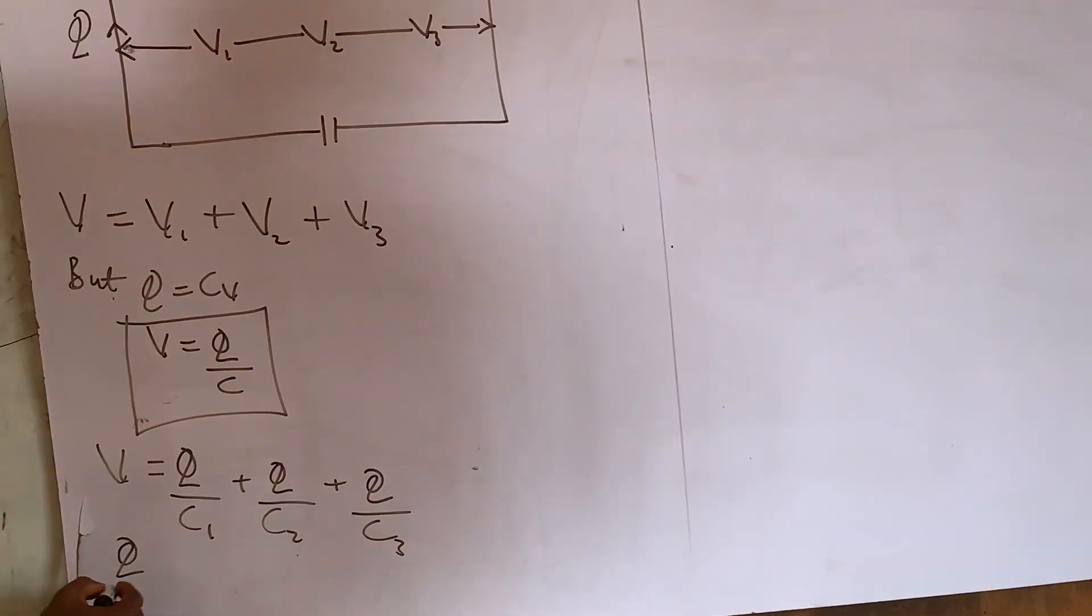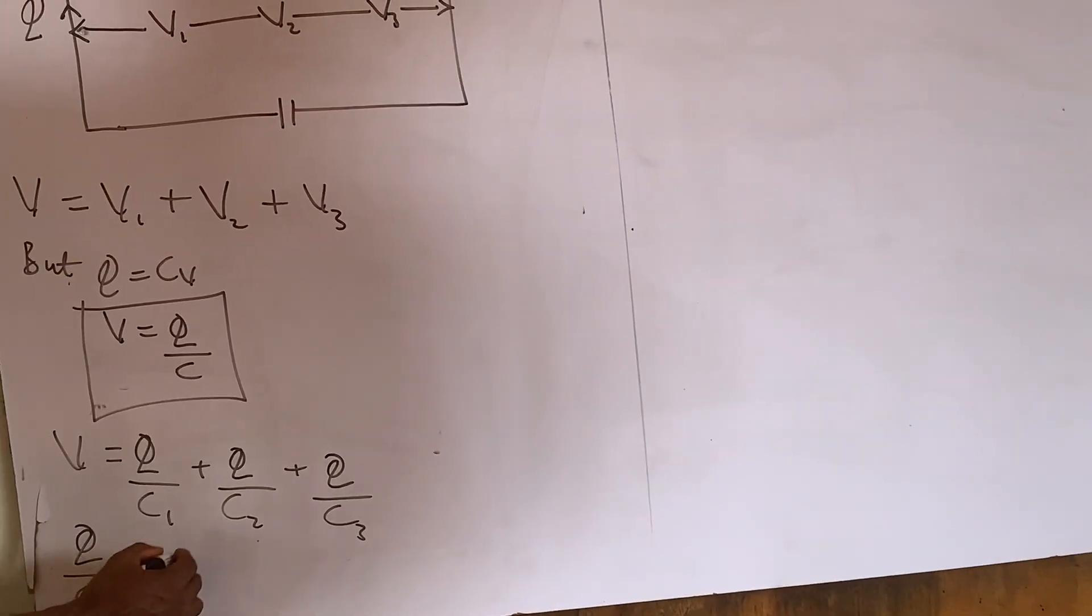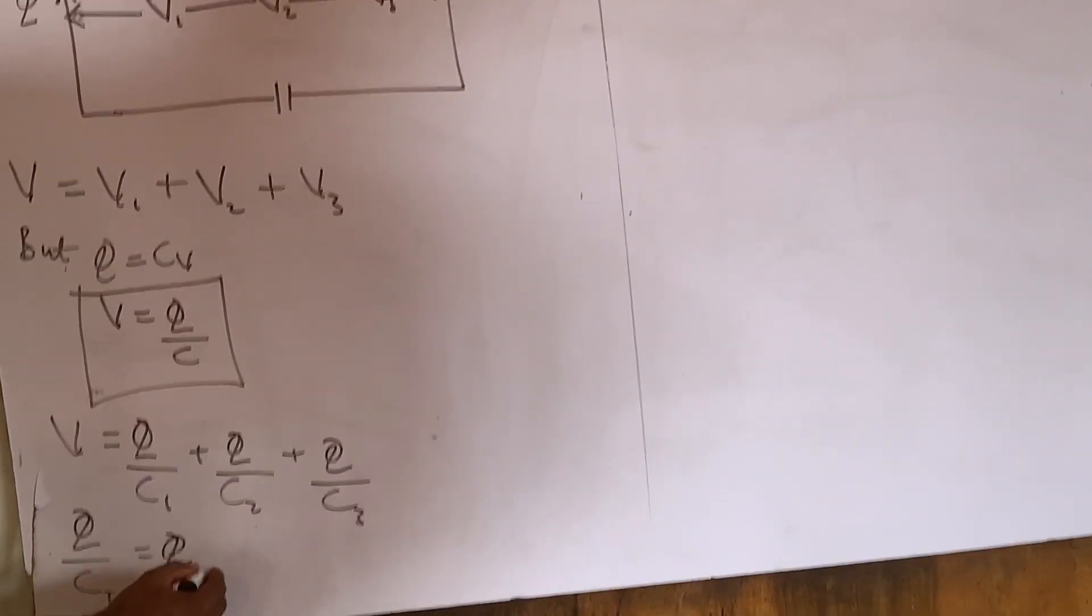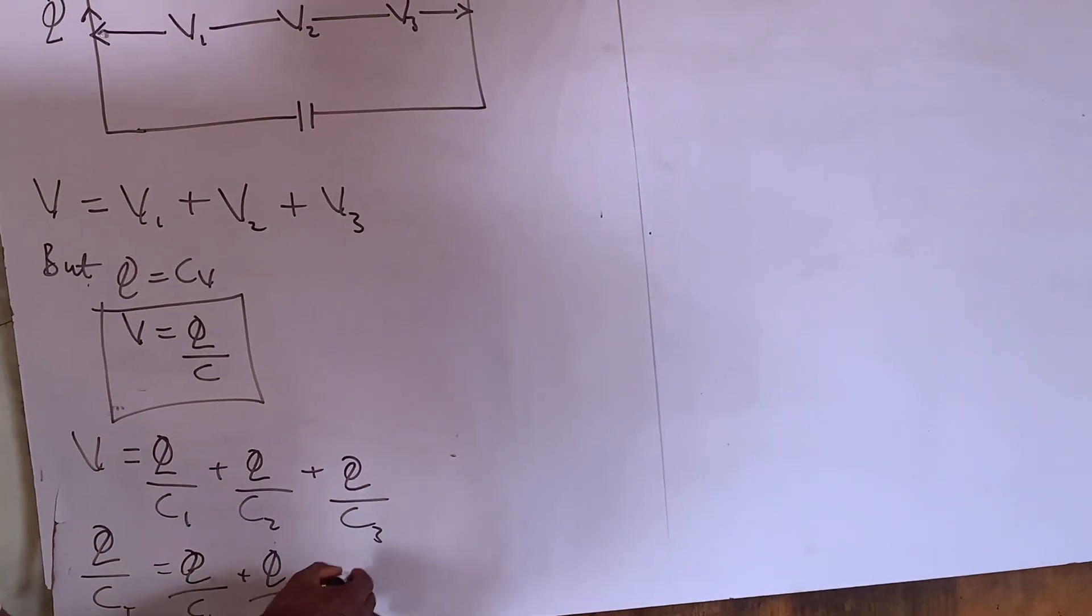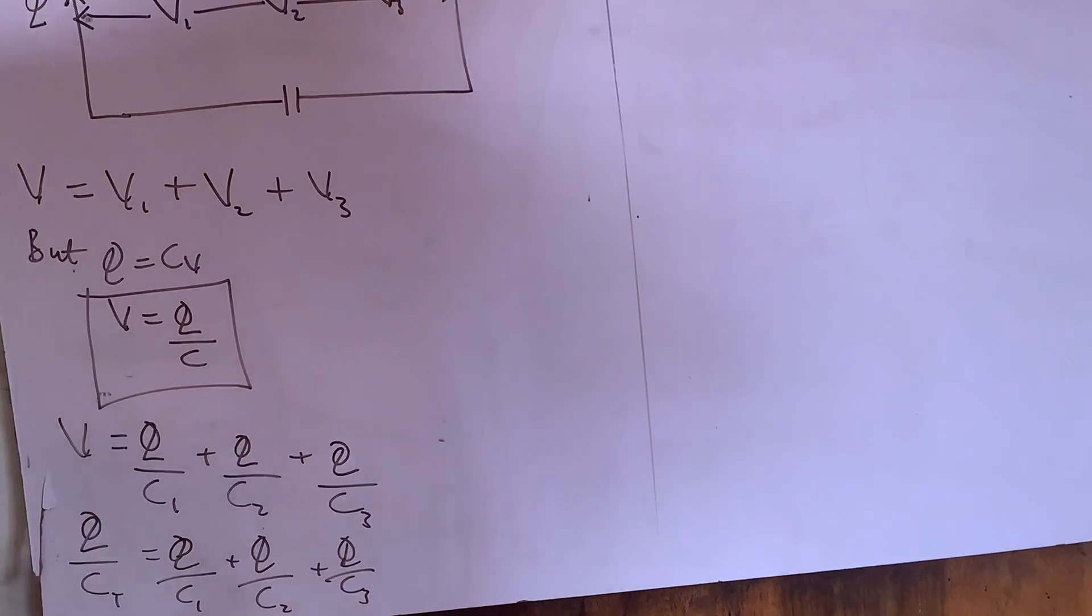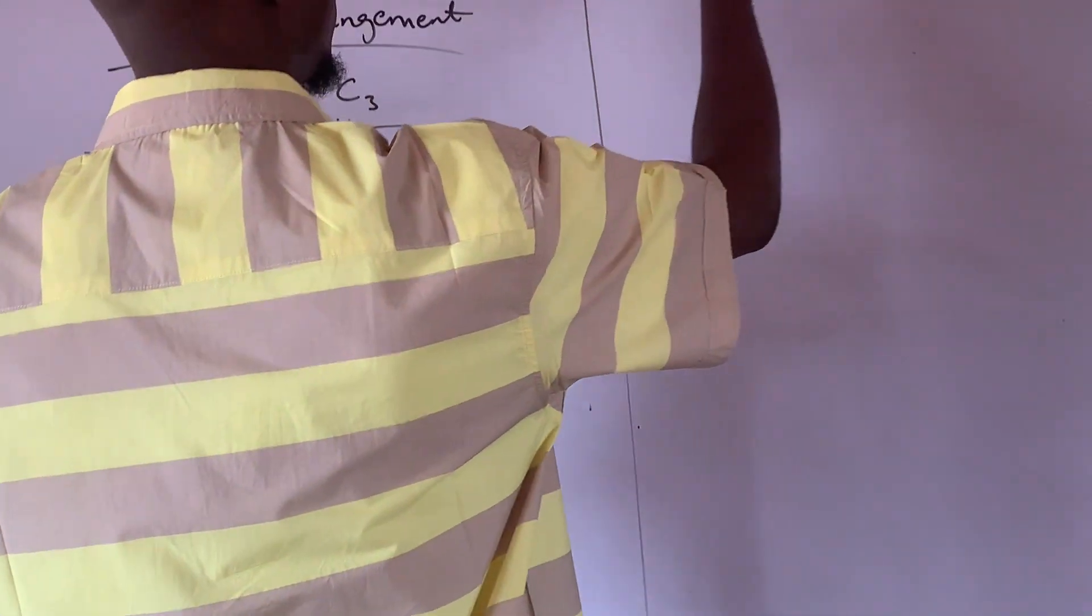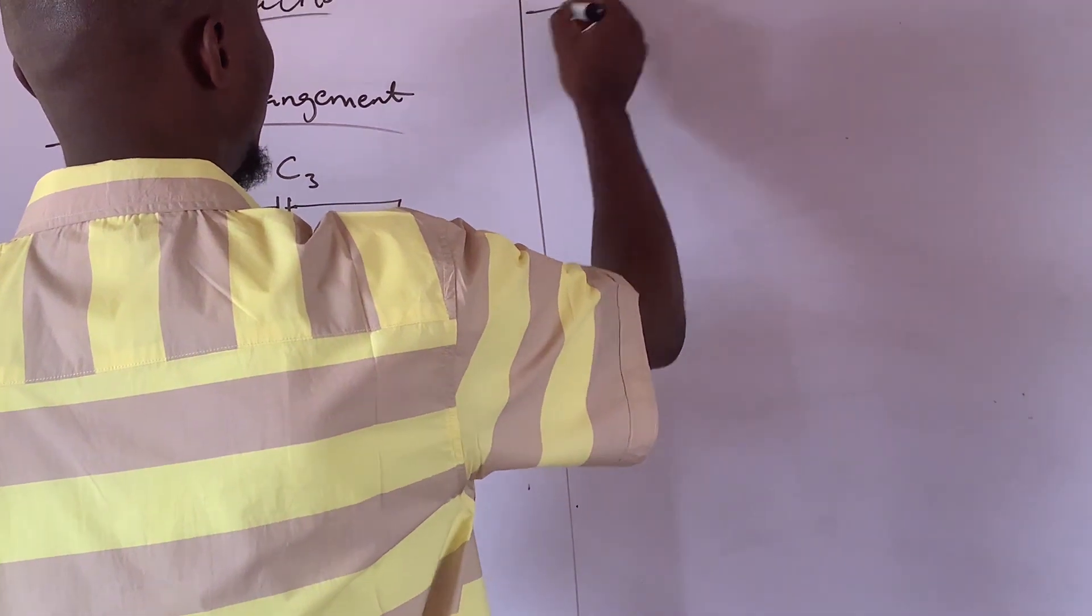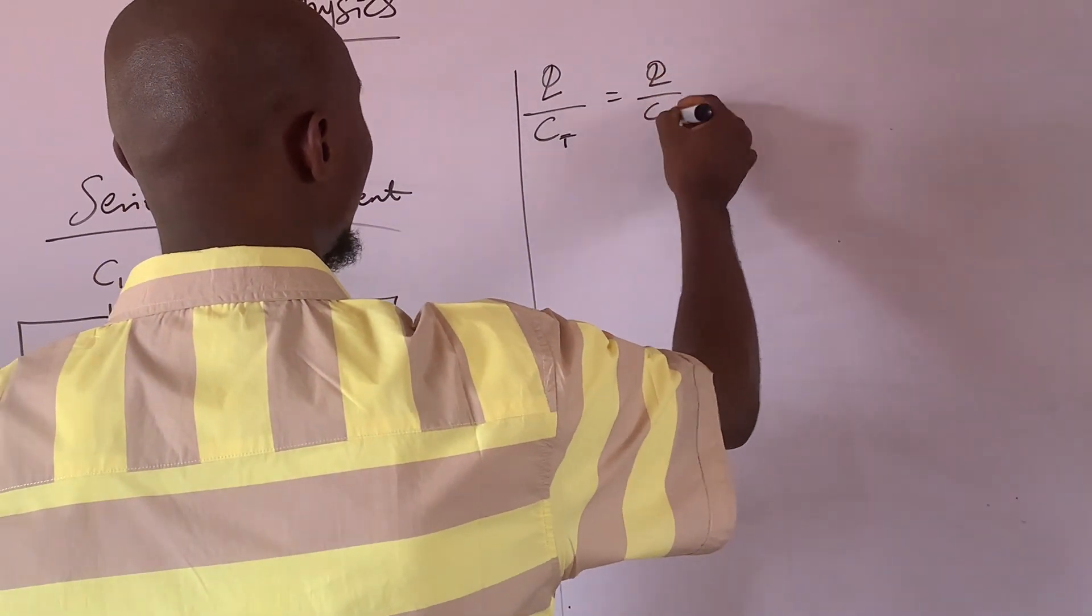What do we do? What do we do? Here, also note that this V is also equal to Q over C. Now, it's called CT. Now, it's called CT. And this equals to Q over C1 plus Q over C2 plus Q over C3. What do I do?